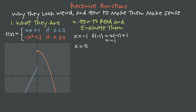If instead we wanted to evaluate the function at x = 0, we look at our inequalities and see that 0 satisfies x ≥ 0, which means we plug into -x² + 3. We get -(0)² + 3 = 3. So at x = 0, the function's value is 3. The key is that every x value plugs into just one rule of the piecewise function. The only trick is knowing which one to use, and we decide based on the condition — whichever condition is satisfied by our x value, we use that one rule and only that rule.